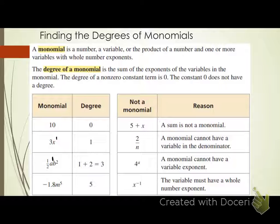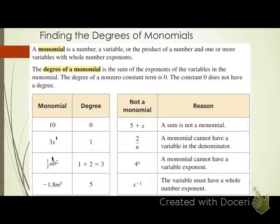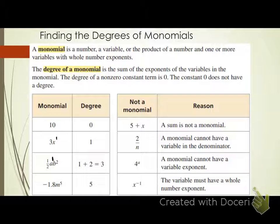This chart to the right shows examples that are NOT monomials. First, 5 plus x — our definition says nothing about addition, so a sum is not a monomial. Next, 2 over n — a monomial cannot have a variable in the denominator. Then, 4 to the a power — a monomial cannot have a variable exponent. And x to the negative first power — the variable must have a whole number exponent. Negative numbers are not whole numbers; whole numbers are the positive integers: 1, 2, 3, 4, 5 and so on.